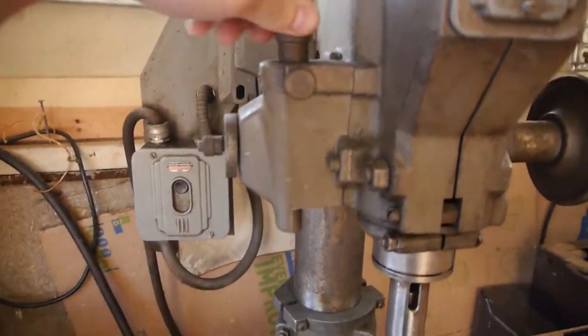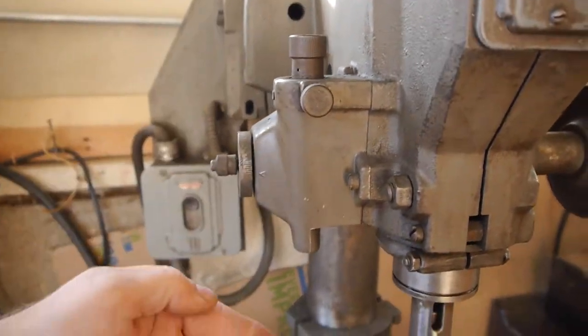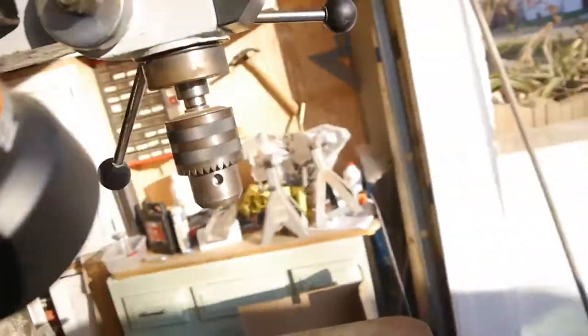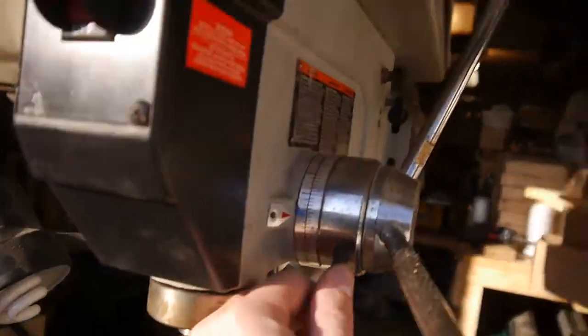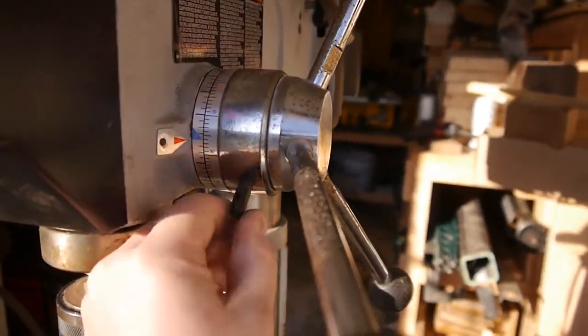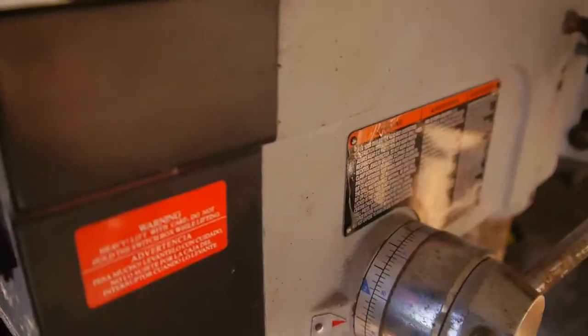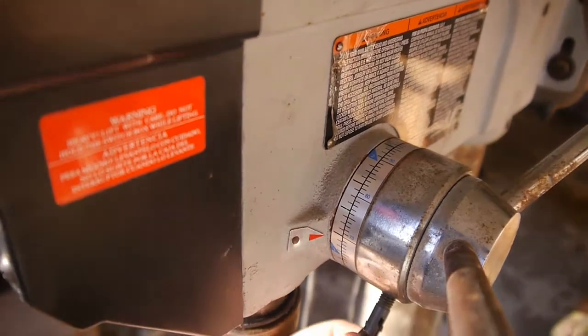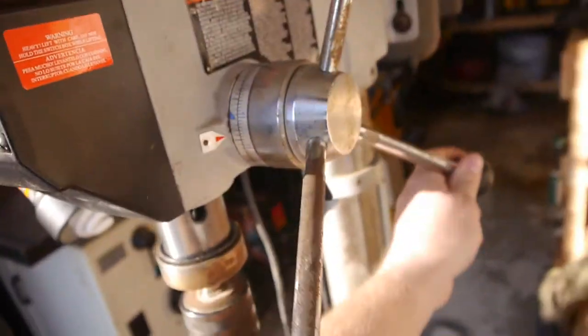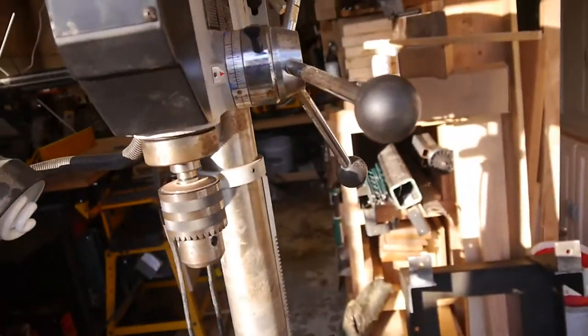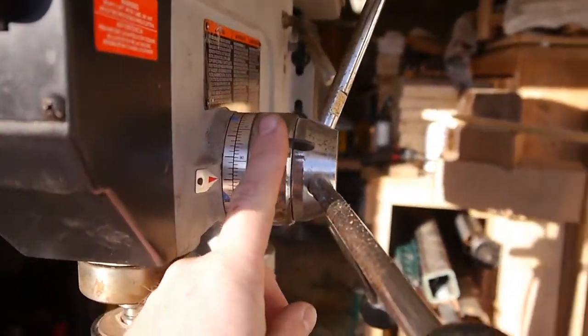This mechanism here is how you adjust the depth stop. Seems much more accurate than this mechanism here, which was just this kind of a set screw. So you'd bring her down, rotate it, set it in place, and then you weren't able to go past that little bit there.